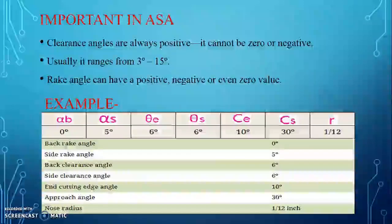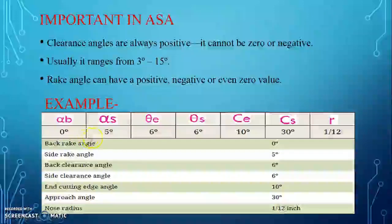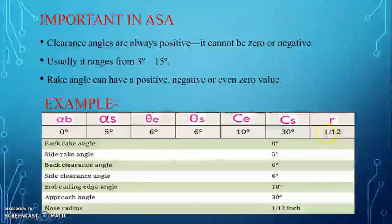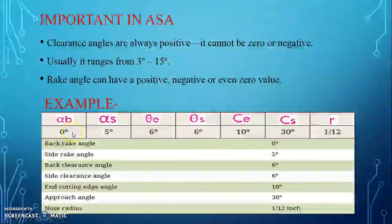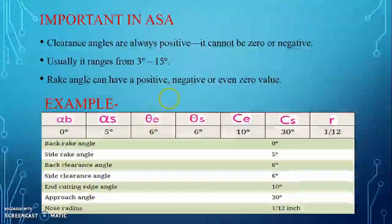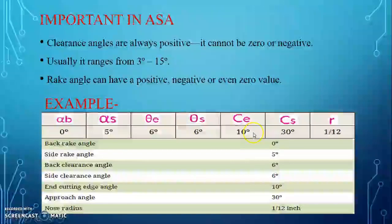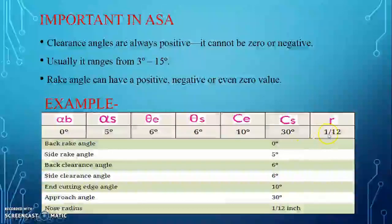For example, a tool in the market may have the signature: 0 – 5 – 6 – 6 – 10 – 30 – 1/12. This is read in the ASC system as: back rake angle = 0°, side rake angle = 5°, end relief angle = 6°, side relief angle = 6°, end cutting edge angle = 10°, side cutting edge angle = 30°, and nose radius = 1/12 inch.